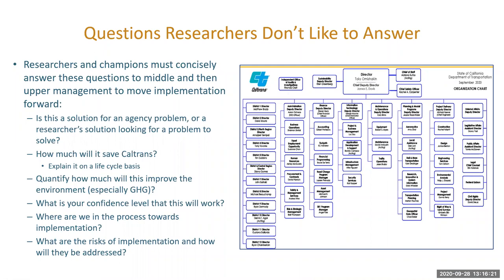Here's an org chart. We have to be able to precisely answer these questions, which make a lot of researchers — including myself — uncomfortable. The people who are going to support implementation need answers, and we can't hem and haw. The questions are: Is this a solution for something that's important to the implementing agency, or do we have a hammer and everything looks like a nail? Is this a solution looking for a problem to solve? Are we really solving their problem, not our problem? How much money will it save — framed as a life cycle answer? How much will this improve the environment? What is your confidence level that this will work?